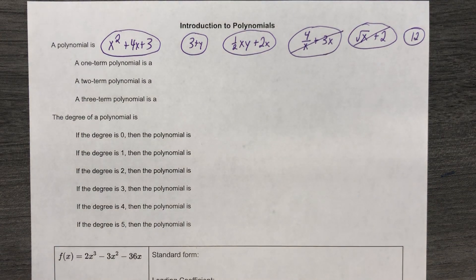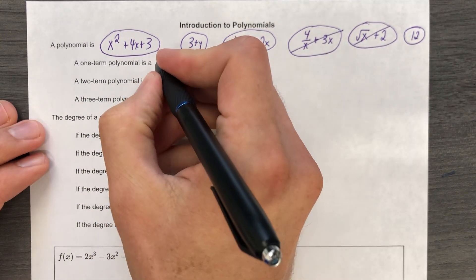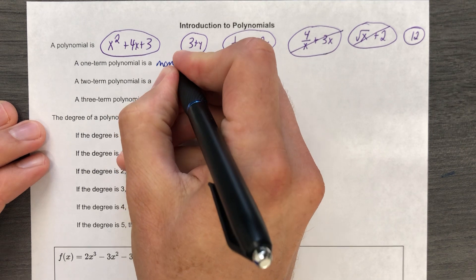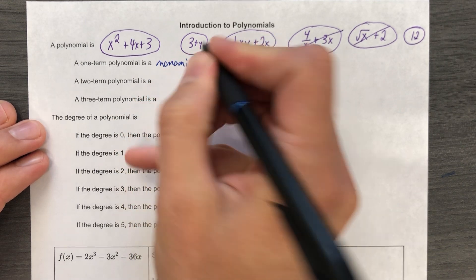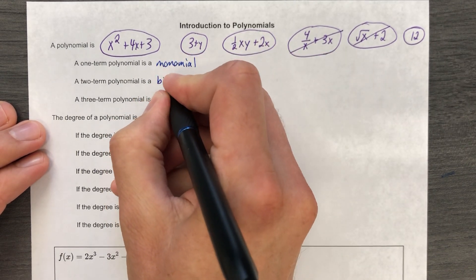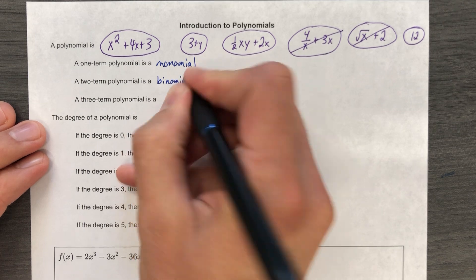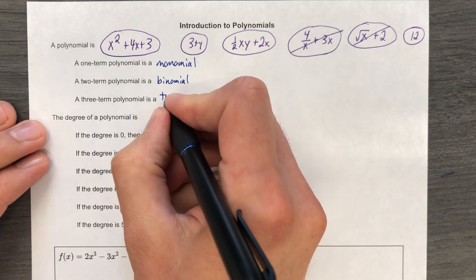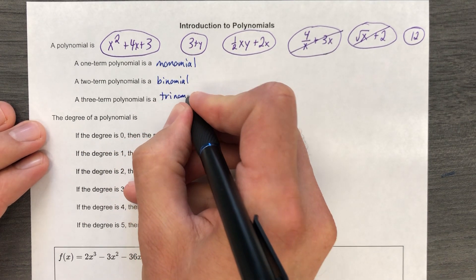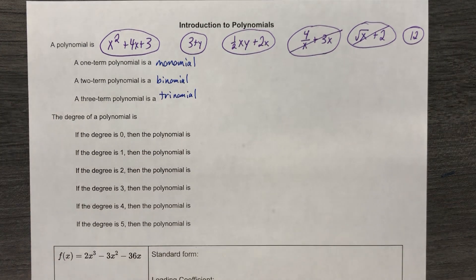So a one-term polynomial is a monomial. Two-term polynomial is a binomial. A three-term polynomial is a trinomial. A four-term polynomial is not something we deal with. Quadranomial, I guess.